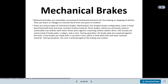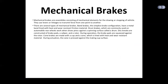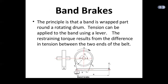Mechanical brakes are assemblies of mechanical elements for slowing or stopping vehicles. They use levers or linkages to transmit force. Types include: band brakes — the simplest configuration, having a metal band lined with heat- and wear-resistant friction material; drum brakes — where shoes press against a spinning drum; disc brakes — where brake pads are squeezed against a rotor; and cone brakes — made with a cup and cone lined with heat- and wear-resistant material, where the cone is pressed against the mating cup surface.